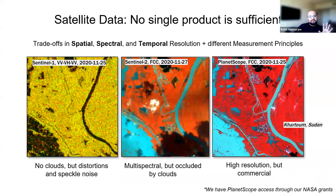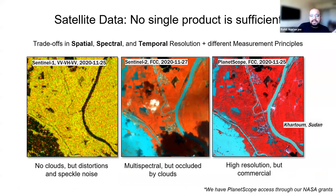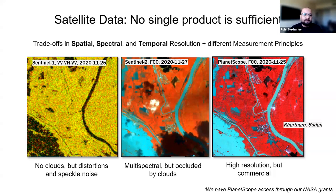We quickly found out that no single product is sufficient for flood mapping — each and every sensor has its own issues, and it's equally frustrating whether public or commercial. There are different trade-offs: some applications need high spatial and definitely temporal resolution to cover the entire flood duration. Different measurement principles such as radar versus optical also affect flood accuracy. For example, Sentinel-1 is less affected by clouds, but there are distortions and speckle noise, especially in urban regions.